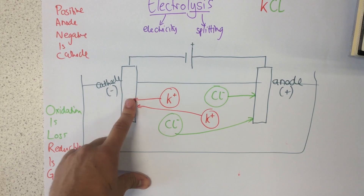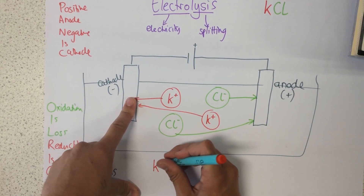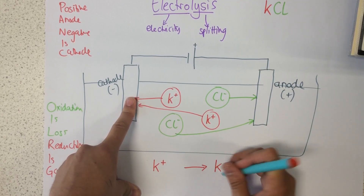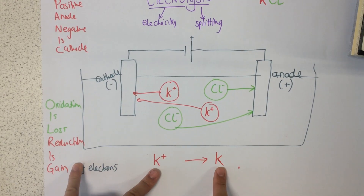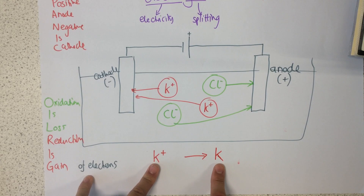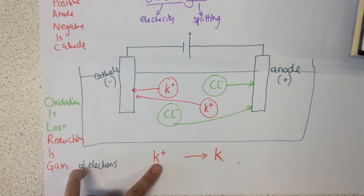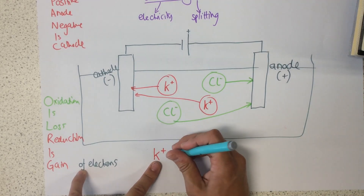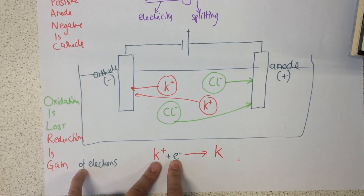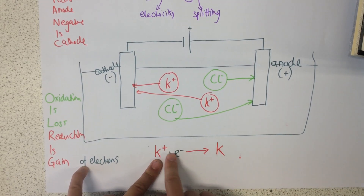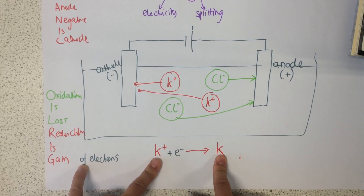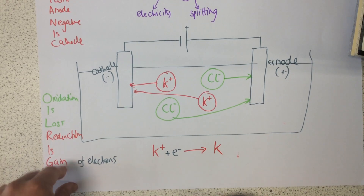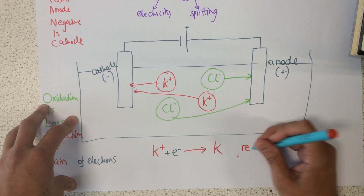At the cathode, we have potassium ions and we're going to form solid potassium, either by gaining or losing electrons. Potassium has a positive charge, and electrons have a negative charge, so we need to gain one electron so the positive and negative cancel out to form potassium. Because electrons are gained, this is an example of reduction.